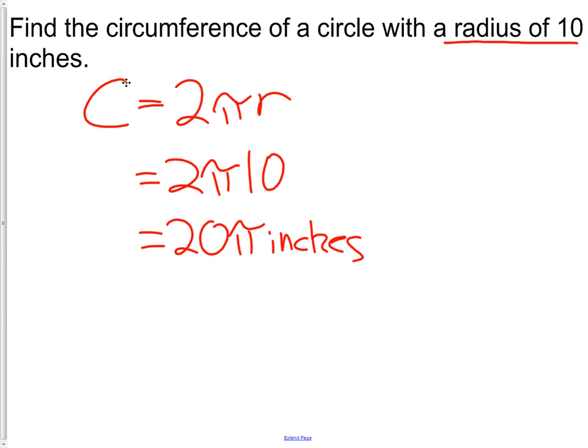Now, depending on the question, sometimes leaving our answer as 20 pi inches is the best way to leave our answer. Sometimes we'll actually want to multiply that using our calculator to get the approximation, because any time we use the value of pi, we're going to be approximating, because it is a never ending decimal, so at some point we'll have to round. We're just going to leave our answer for this question as 20 pi inches.